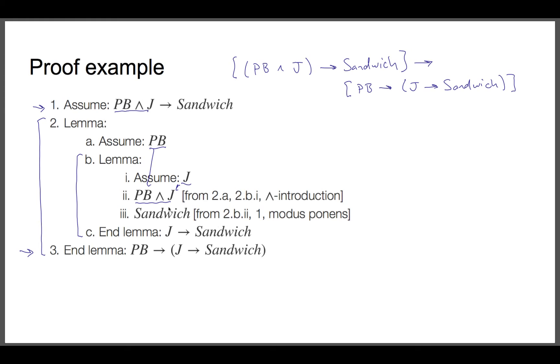And so I apply modus ponens. Peanut butter and jelly implies sandwich, and I can conclude sandwich. And now we end this lemma.